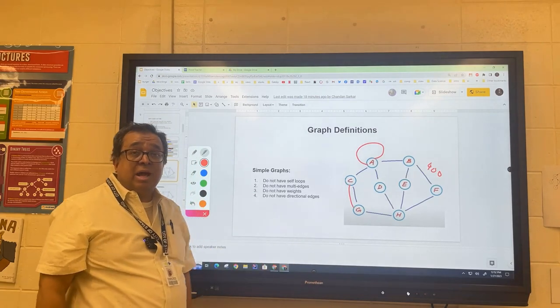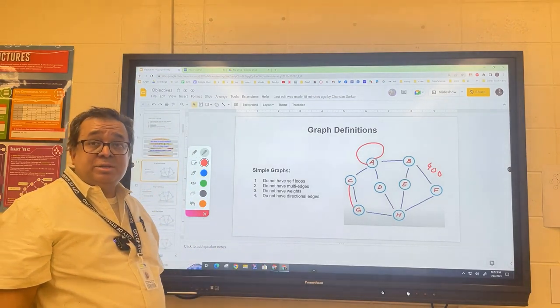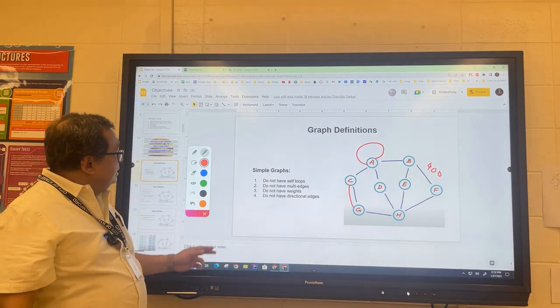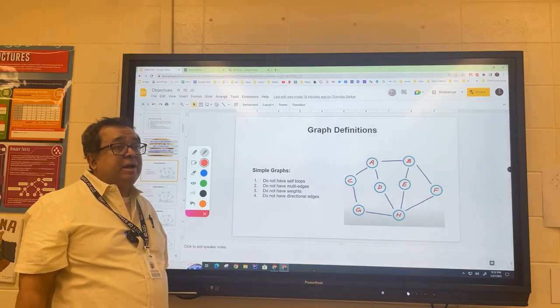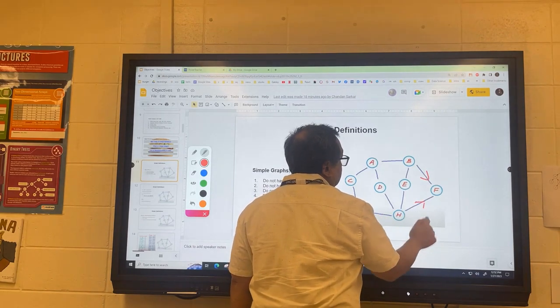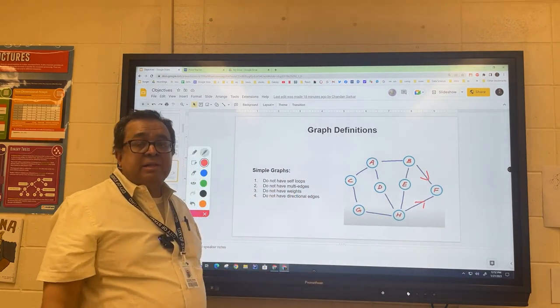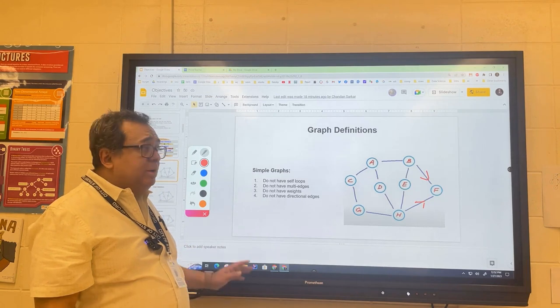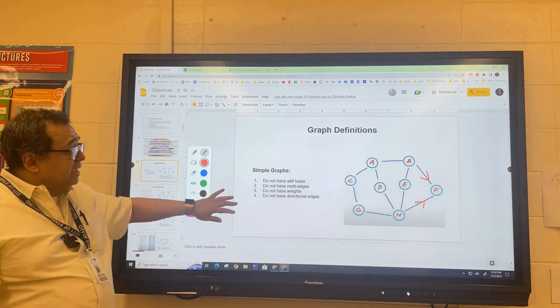So the edges could have weights on them. We're going to be dealing a lot with graphs with weighted edges later in the course. And lastly, a simple graph does not have directions on its edges, so there are no arrows like this. That would be a directed graph that's not simple anymore.